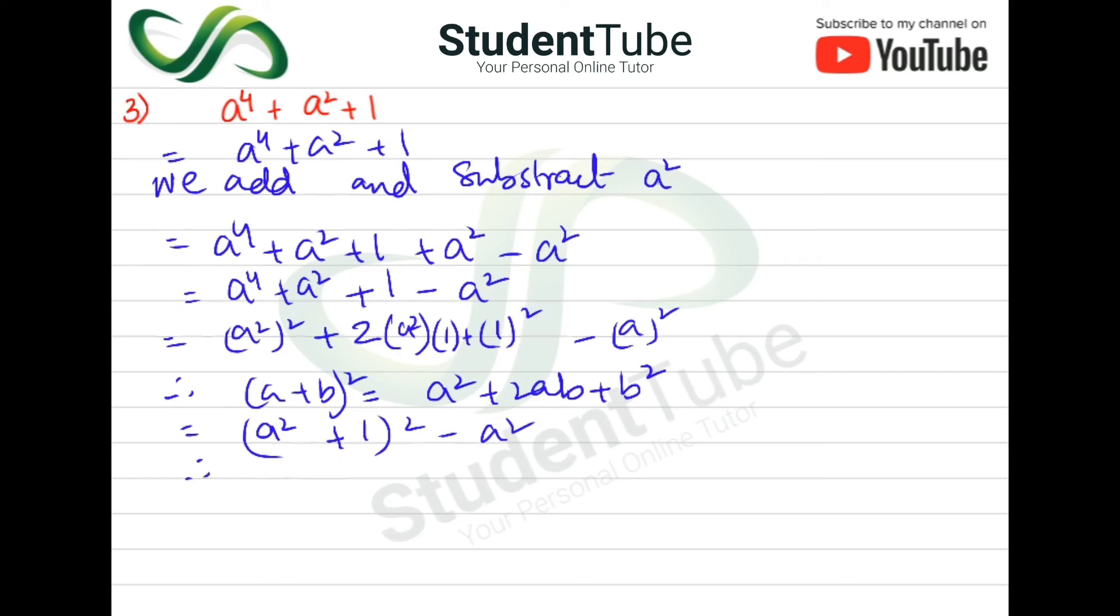Now we apply the difference of squares formula: a² - b² = (a - b)(a + b). So the answer is: (a² + 1 - a)(a² + 1 + a). Answer.